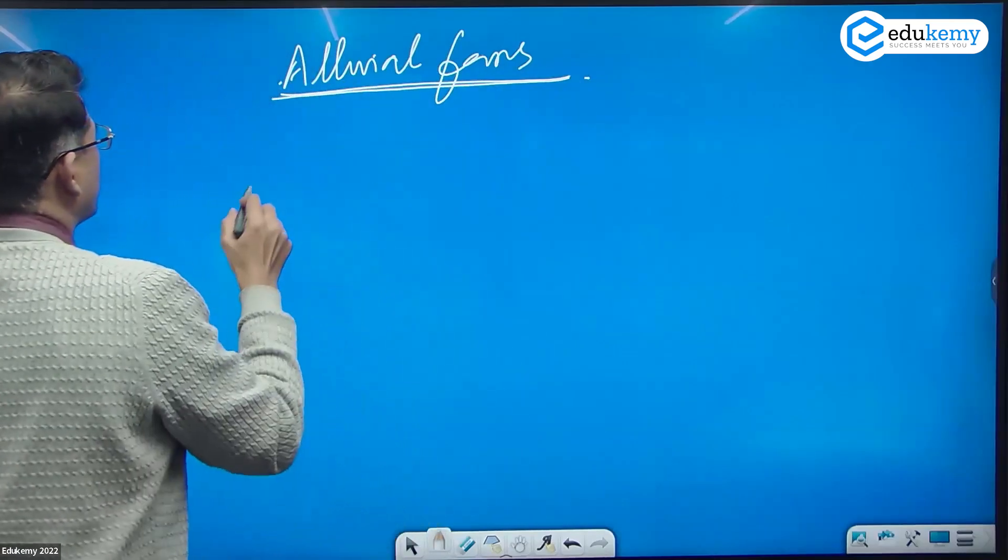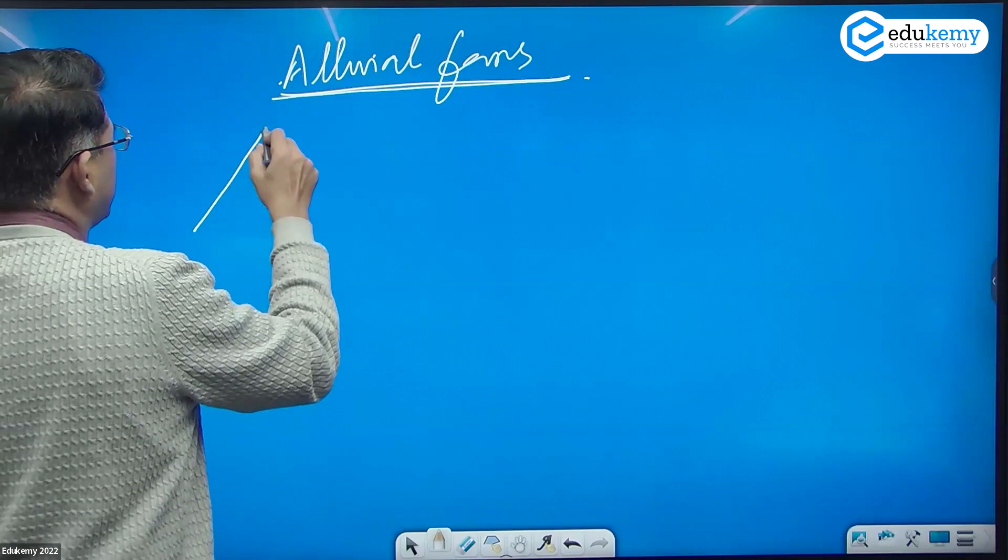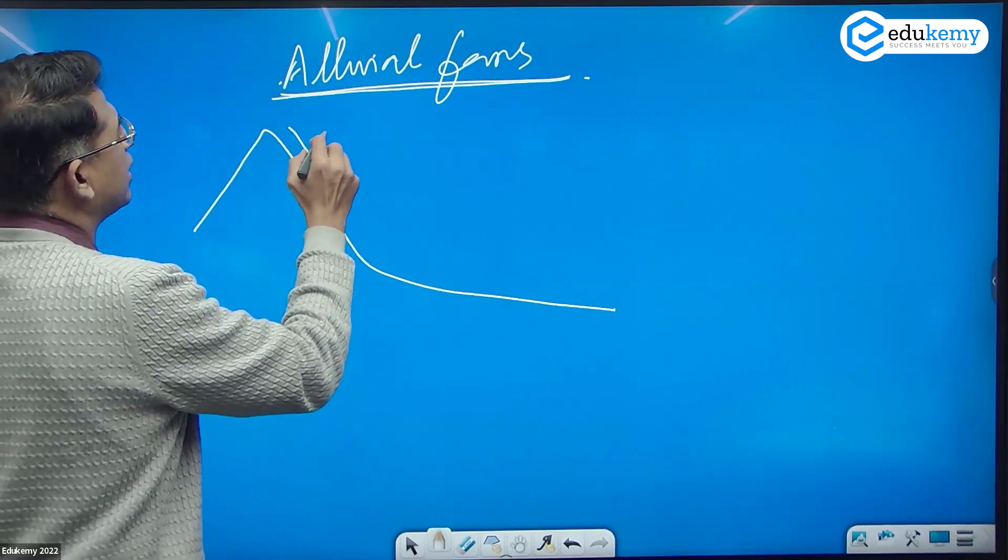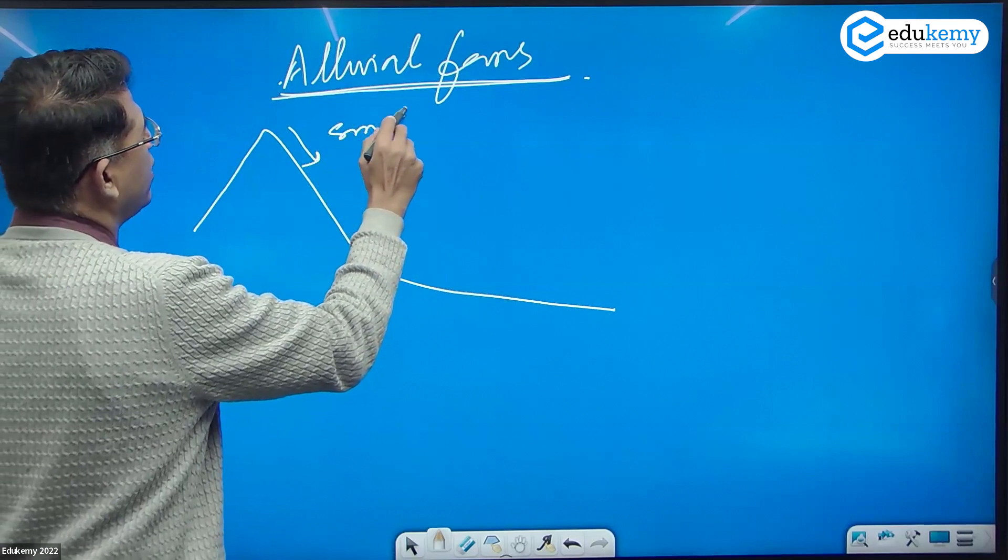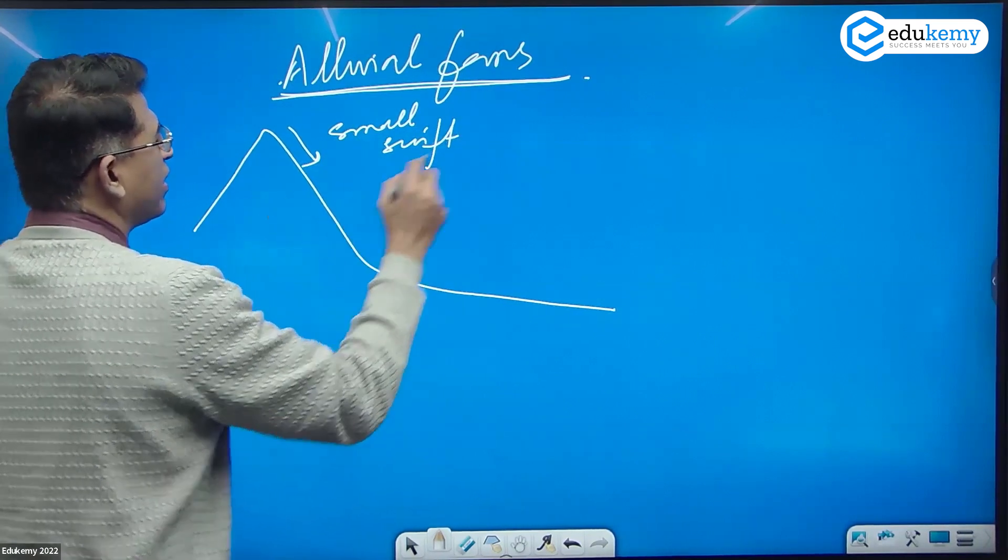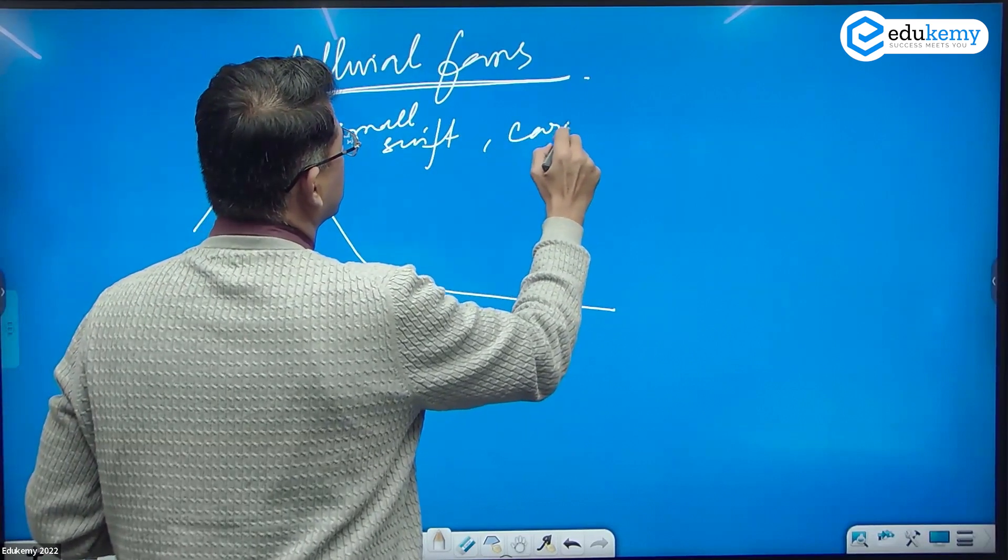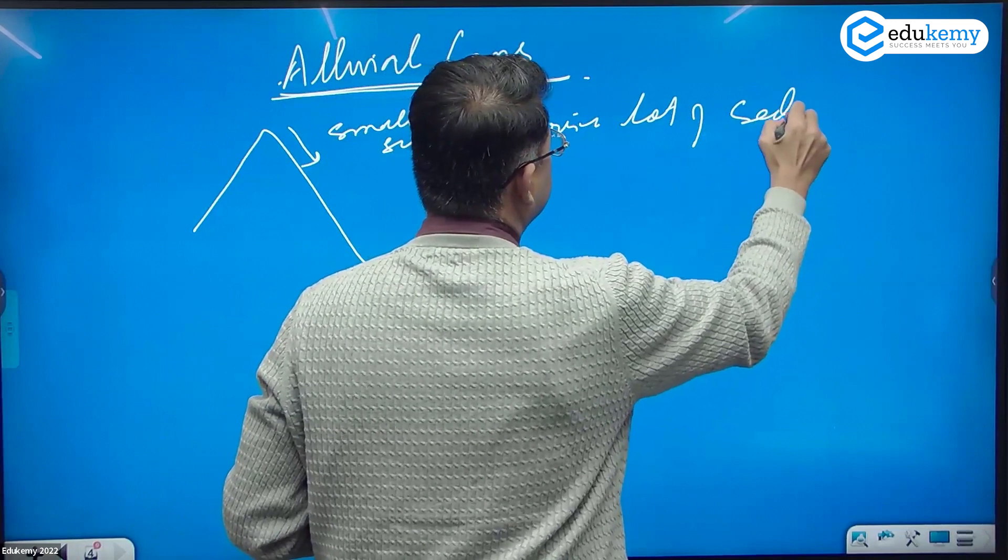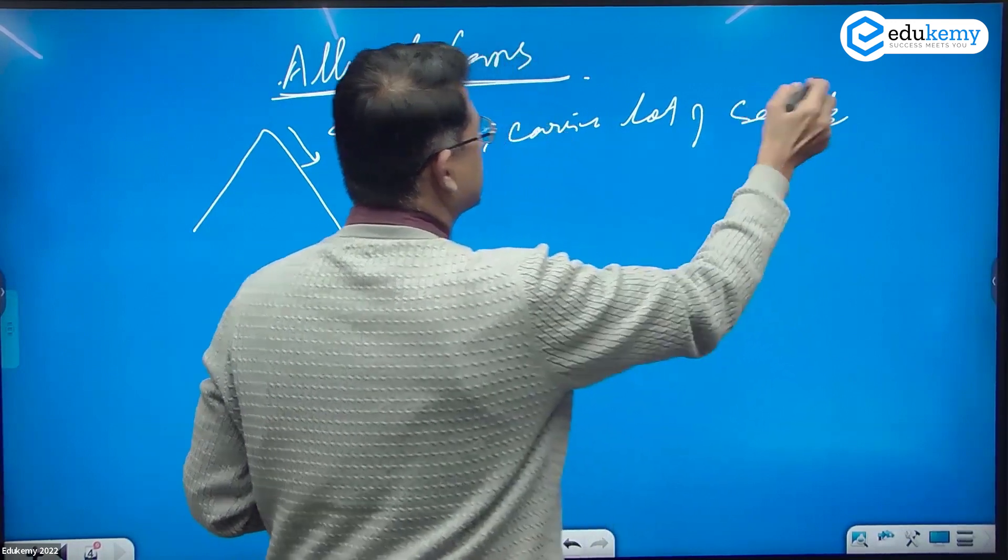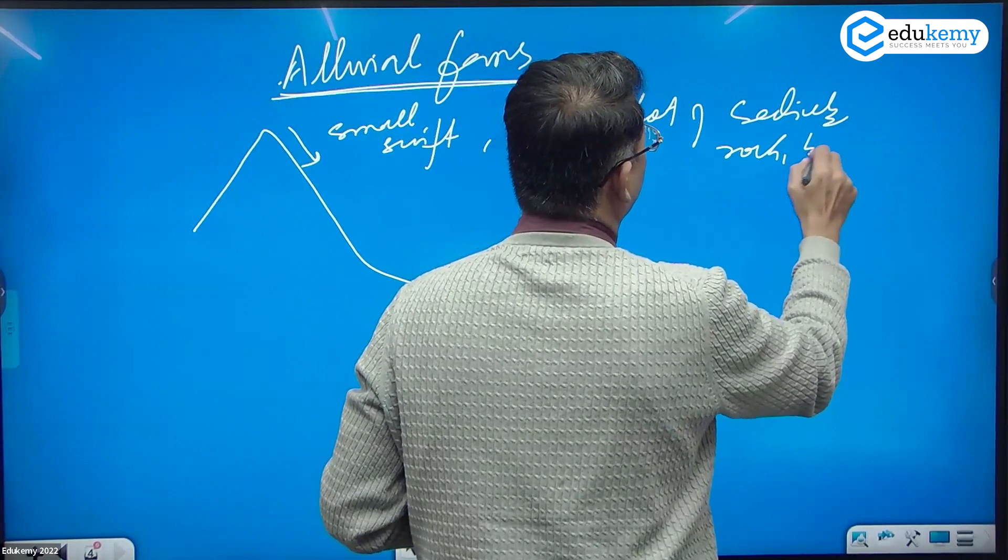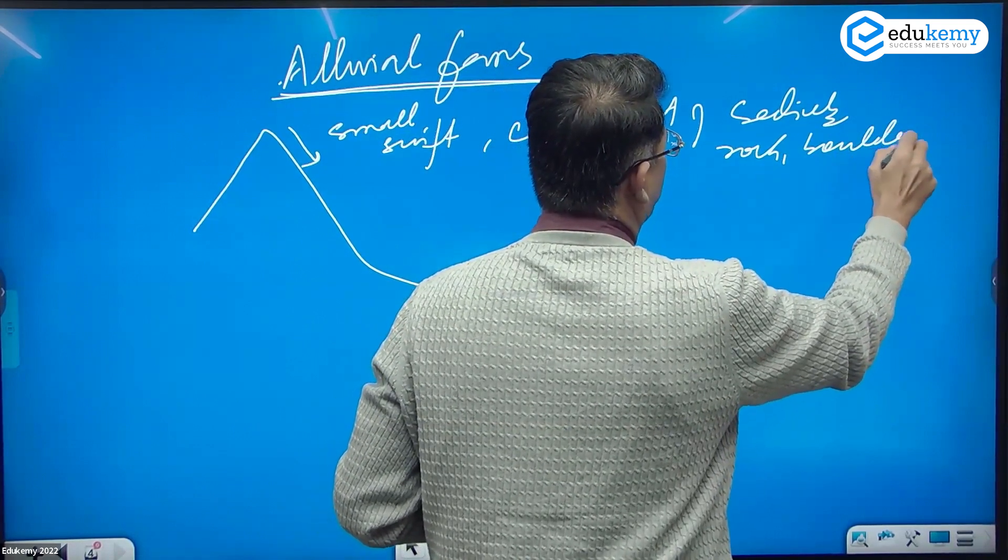Alluvial fans. What happens is when a river is coming down the mountain, this is a small river, it is a swift river. It carries a lot of sediments and these even rocks, it includes boulders.